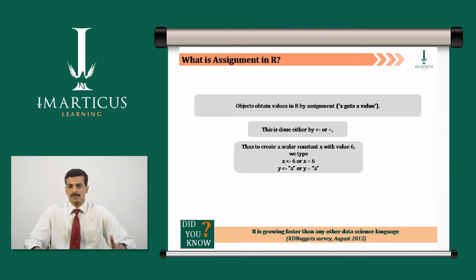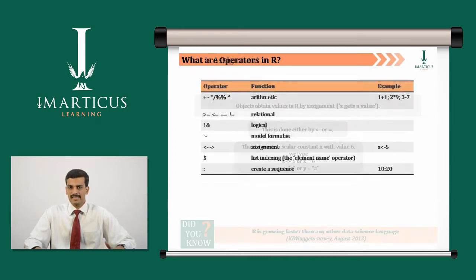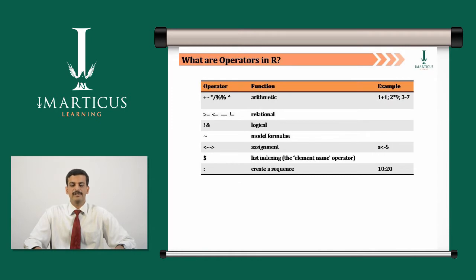For example, if you've created a variable X and want to assign a value to it, you can say X equals 6, or X less than hyphen followed by the value. Like other programming languages, R supports all conventional operators: plus, minus, multiplication, division, and modulus.